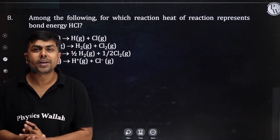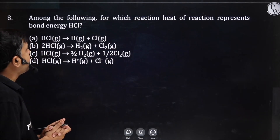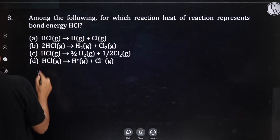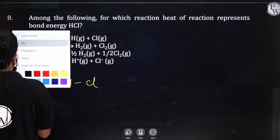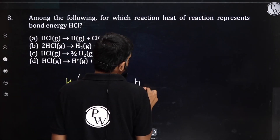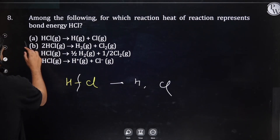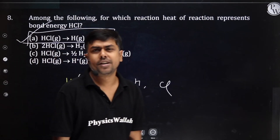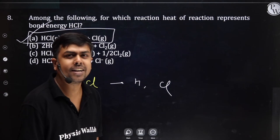Next question: which reaction represents bond energy of HCl? Bond energy is the energy required to break the HCl bond into gaseous hydrogen atom and gaseous chlorine atom. The correct option representing bond energy of HCl is option A.